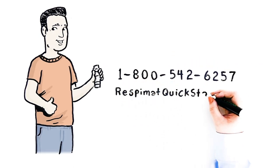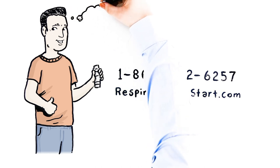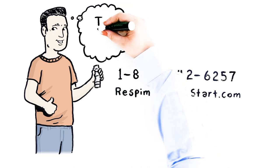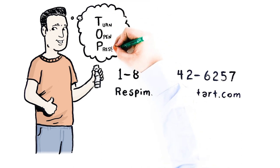he can consult the instructions for use inside the medication box, speak to his doctor or pharmacist, or call 1-800-542-6257. He can also go to respimatquickstart.com for more help. The Respimat Inhaler. For daily use, remember TOP for turn, open, and press.